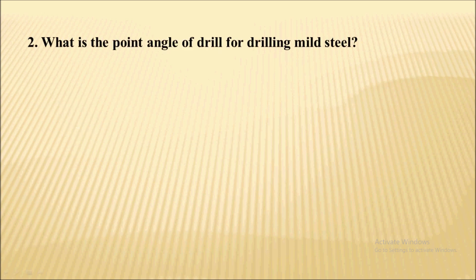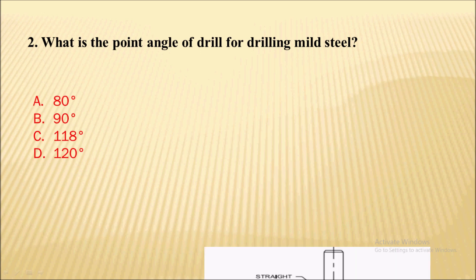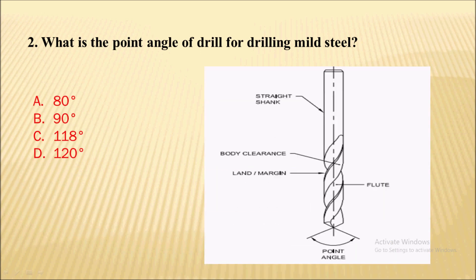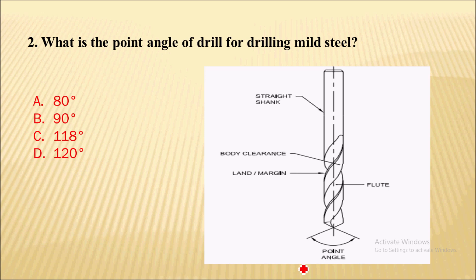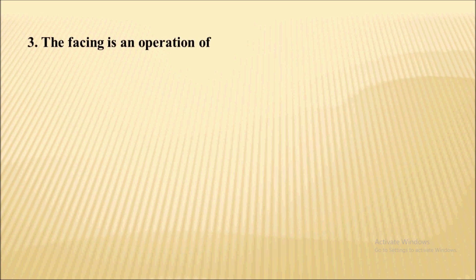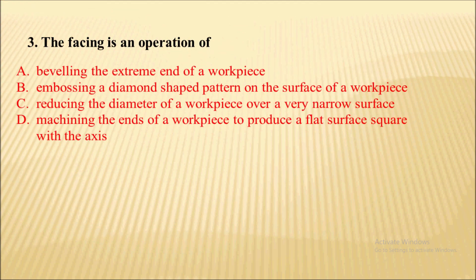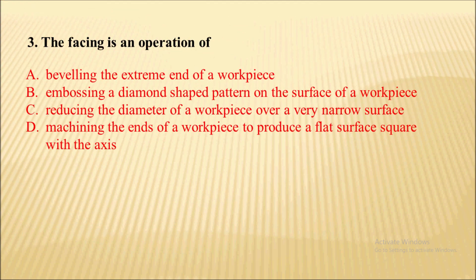Next question: what is the point angle of a drill for drilling mild steel? This is the point angle which you can see in this image. In a drill, it is normally kept at 118 degrees, so the correct answer is 118 degrees.